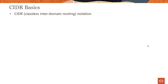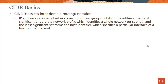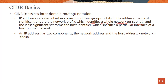CIDR stands for classless inter-domain routing, and in this routing notation, IP addresses are described as consisting of two groups of bits. The most significant bits — the leftmost bits — are the network prefix, which identifies a whole network or subnet. The least significant bits form the host identifier, which specifies a particular interface of a host on that network. Simply put, an IP address has two components: the network address and the host address.